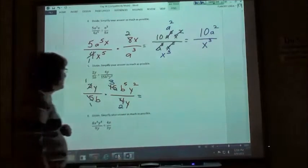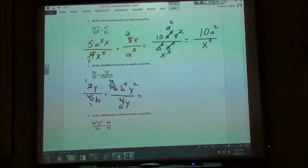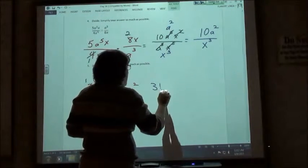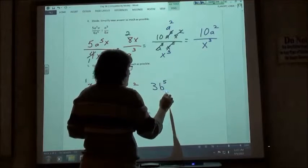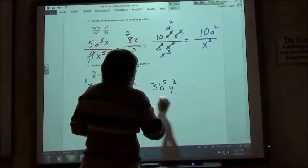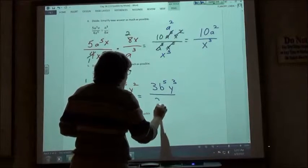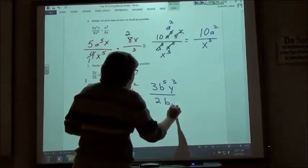Okay, so we would get 3b to the 5th, y to the 3rd. Over, over 2by. Okay.